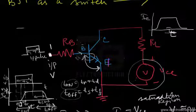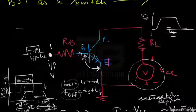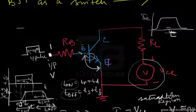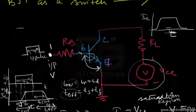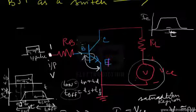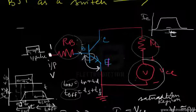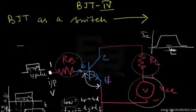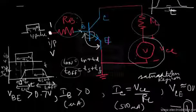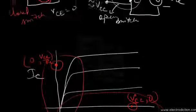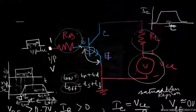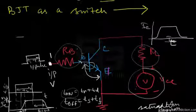Every transistor has a certain base current and collector current tolerance. To limit these currents and prevent transistor burnout, we use the base resistance RB and load resistance RL as current limiters based on the applied voltage — these are protective measures. With that, we've covered the basic understanding of how a BJT operates as a switch. We'll meet in the next tutorial on BJT part 5.